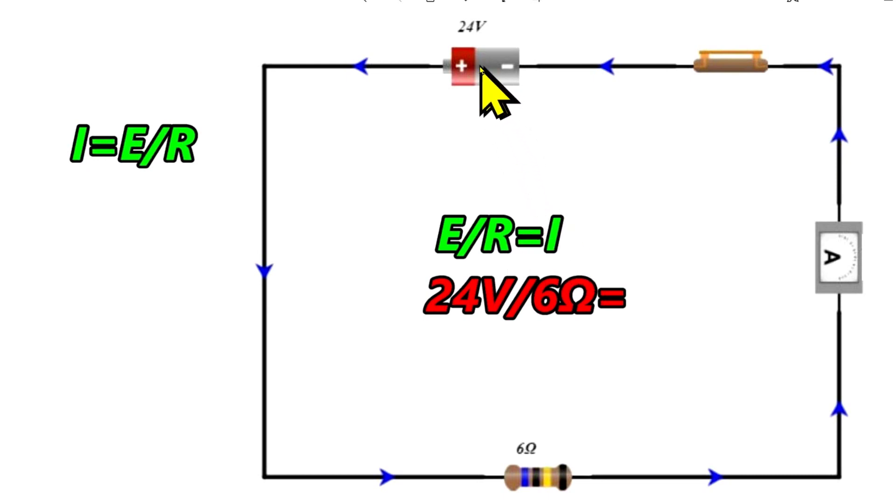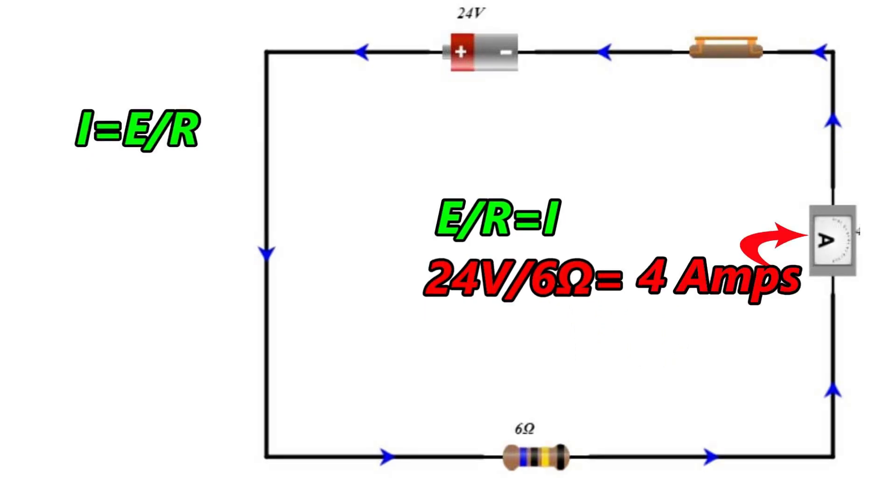So volts divided by ohms equals amps. So here's our volts right here. We've got 24 volts. I have that written down right here. 24 volts. And we have an ammeter over here. We don't know what this is going to be. And then over here, we have 6 ohms right here. So we have the volts divided by the ohms. And so how many amps are there going to be? That's right. It's 4 amps.